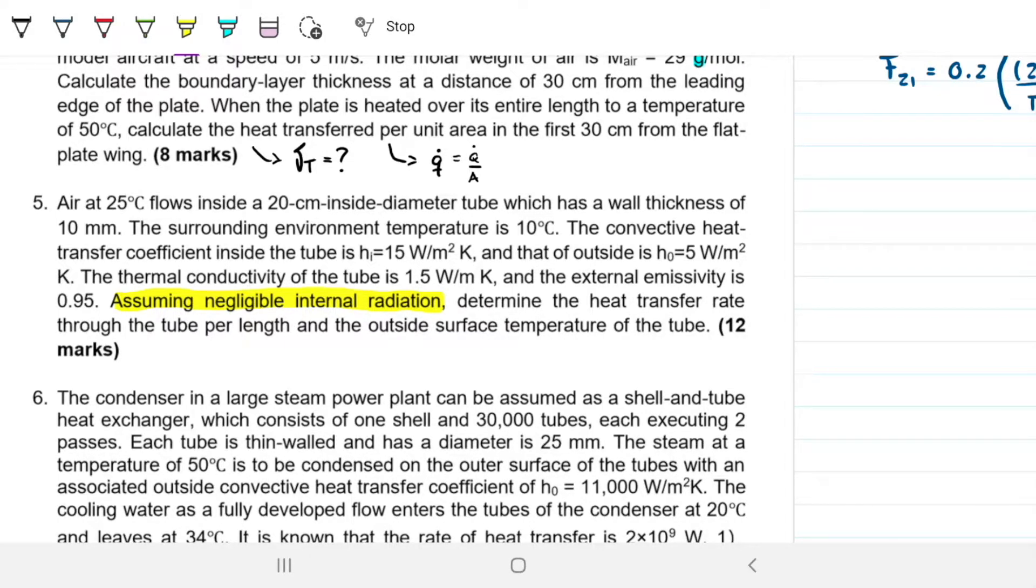So we have to find out two different things. One is our Q, more precisely our Q per L, per unit length. That's the first part of the question. And the second one is, what is the outside temperature? So right outside, T outside, right outside of the tube.